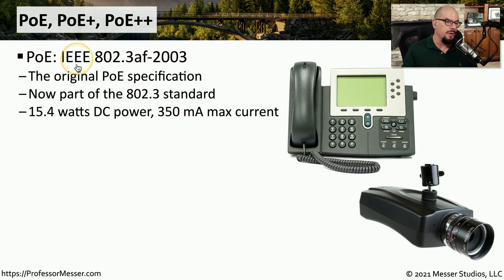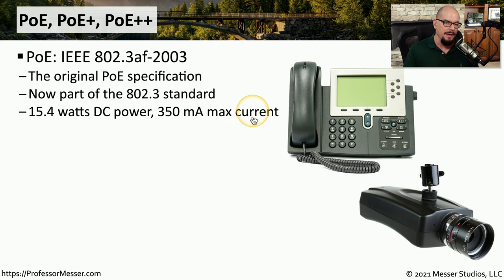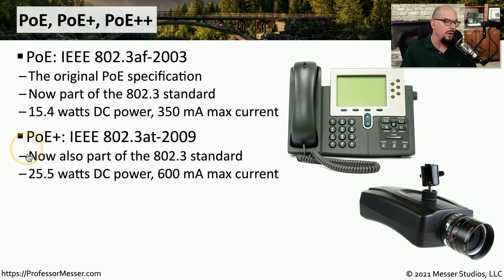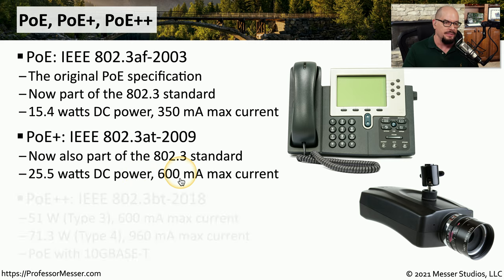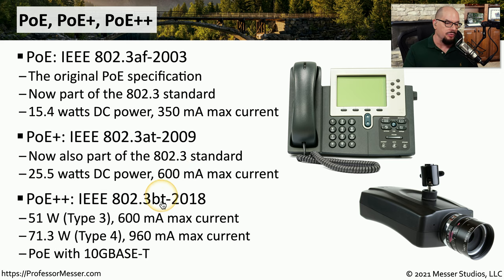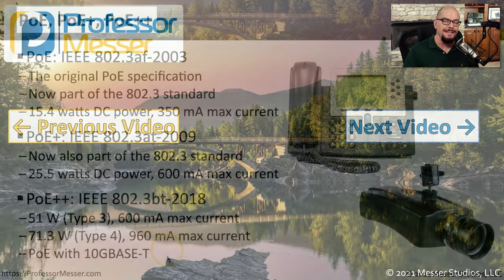The original PoE specification was IEEE 802.3af, introduced in 2003, providing 15.4 watts of DC power with a 350 milliamp max current. PoE+ is IEEE 802.3at, introduced in 2009, with an increased 25.5 watts of DC power and a 600 milliamp maximum current. PoE++ is the IEEE 802.3bt standard introduced in 2018, providing 51 watts over a type 3 connection with a 600 milliamp max current, and 71.3 watts over a type 4 connection with a 960 milliamp max current — the standard you'd see running power over ethernet on a 10 gigabit ethernet connection.